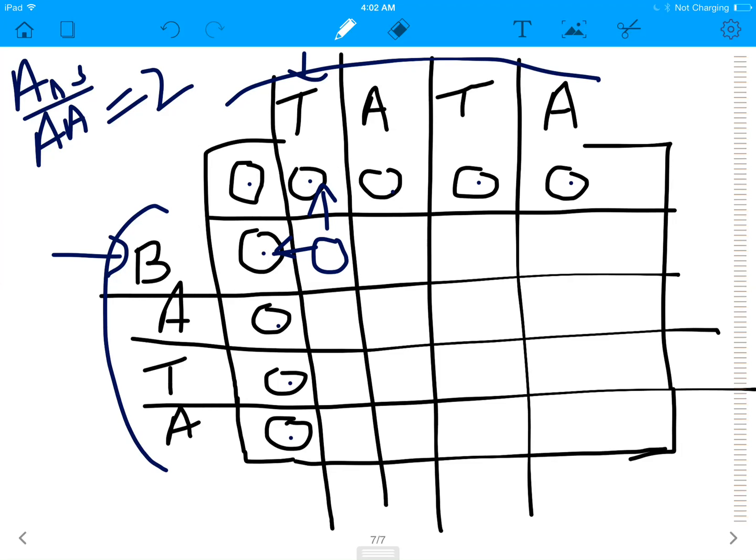Next letter. Between b and a, you go left, and you go top. Maximum of zero and zero is again zero. Between b and t, it's again a zero, and between b and a, it's again a zero.